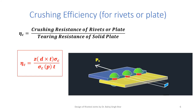Now, crushing efficiency (η_c): we measure it for whichever of the rivet or plate has the lower crushing stress, since the relation is the same and crushing resistance will be lower for the weaker material. By definition, η_c = crushing resistance of rivets or plate / tearing resistance of solid plate = z · d · t · σc / (p · t · σt), where σc is the lower of rivet or plate crushing strength.